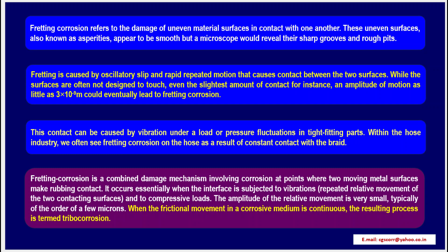Fretting corrosion is a combined damage mechanism involving corrosion at points where two moving metal surfaces make rubbing contact. It occurs essentially when the interface is subjected to vibrations — i.e., repeated relative movement of two contacting surfaces — and to compressive loads.